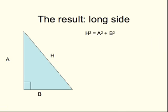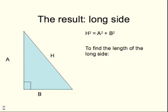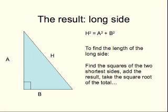Here's the result. If you've got two short sides in a right-angled triangle and a long side — the long side is often referred to as the hypotenuse in textbooks, that's why I've given it the letter H — the relationship between the lengths of the sides is quite straightforward. You square the two short sides, so a squared plus b squared, add them up, and the total will be the same as the square of the long side. In words: find the squares of the two shorter sides, add the result, take the square root of the total.